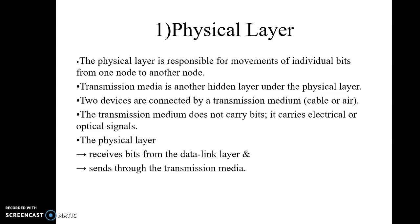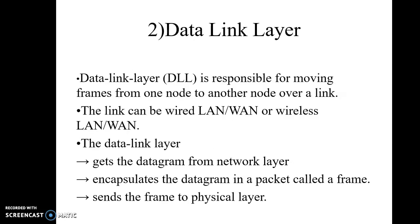The transmission medium is a hidden layer underneath the physical layer. There are two types of transmission medium: wired or wireless, also called guided or unguided. These transmission media do not carry bits directly — they carry either electrical signals or optical signals. So the bits are converted into the appropriate signal format that the transmission medium supports. The physical layer receives bits from the data link layer and sends them through the transmission medium.